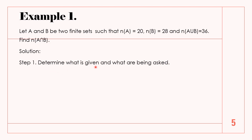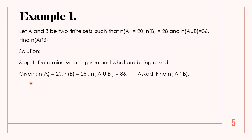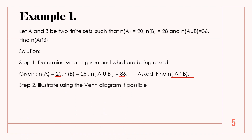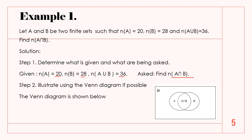Step 1: Determine what is given and what is being asked. Step 2: Illustrate using a Venn diagram if possible. So let's see the Venn diagram. This is the Venn diagram that we must do. We have A here and B here, and we are looking for A intersect B.